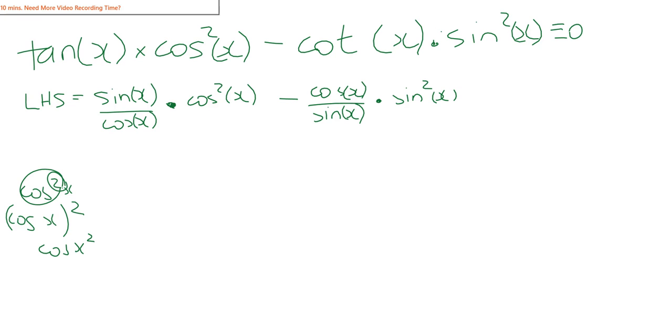So that just means cos x times cos x. So there are two cos x's up here and one there, so they will cancel each other. Happy? One sine will cancel with one sine.